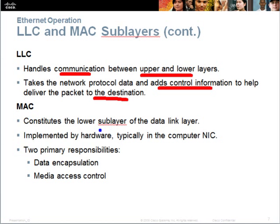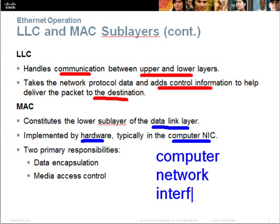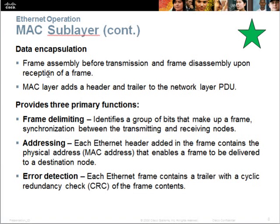The MAC layer is the lower sub-layer of the data link layer. It is responsible for controlling the hardware, typically the computer network card. The two primary responsibilities of the MAC layer are data encapsulation and media access control. For data encapsulation, it frames the data before transmission, and upon reaching the destination it disassembles the frame. The MAC layer adds a header and a trailer to the network layer PDU.